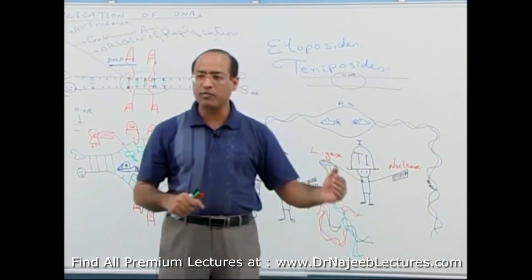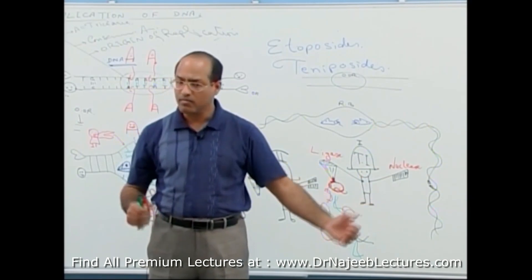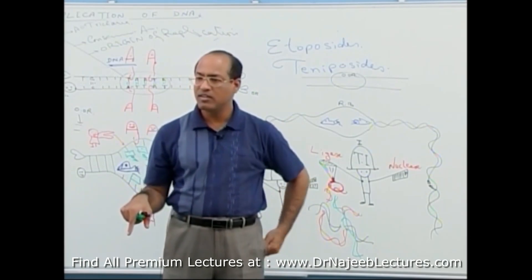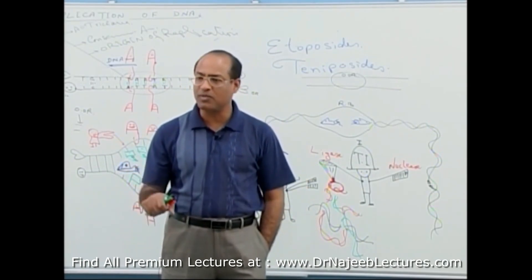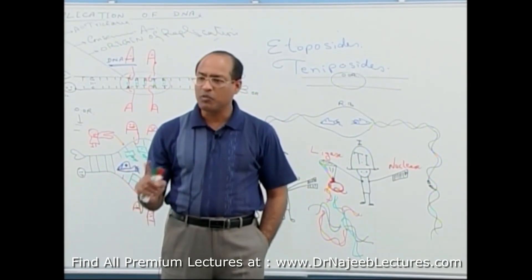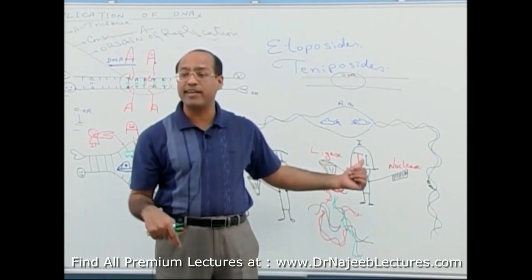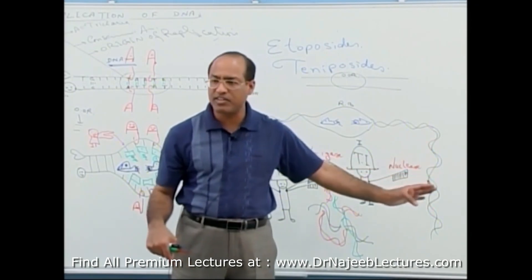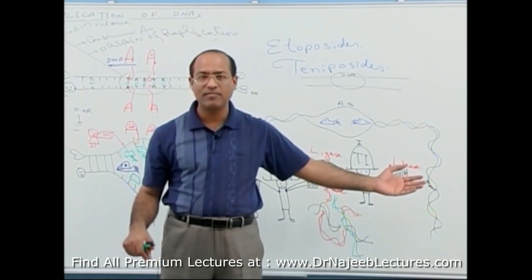Quinolones work on bacterial topoisomerases and etoposide and teniposide work on human topoisomerases. Is that right? Both drugs block the ligase point but let the nucleus point work. So DNAs are fragmented but not resealed.